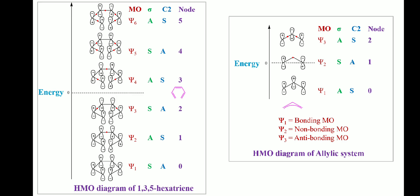Similarly, we can draw Huckel molecular orbitals of 1,3,5-hexatriene. In an allylic system, where the pi electrons are distributed over an odd number of carbons, a non-bonding orbital is also present. In the case of the allylic system, it is represented by psi2, and the non-bonding orbital has zero energy.